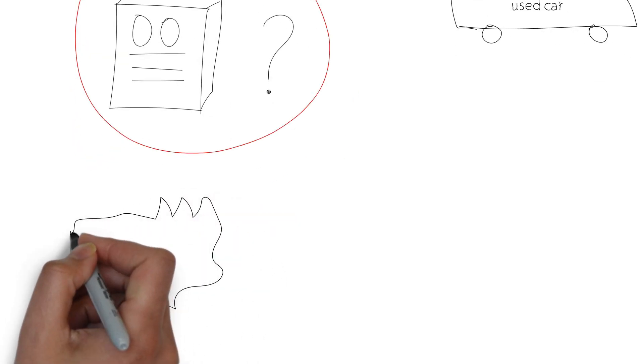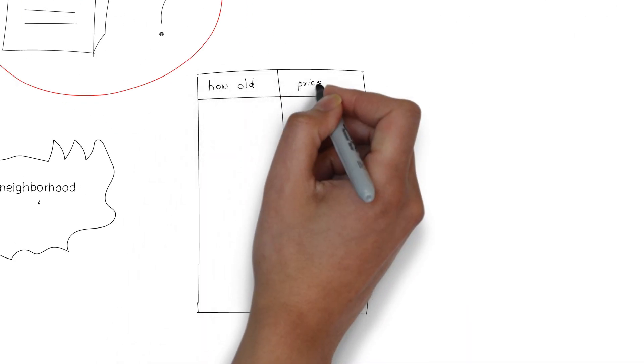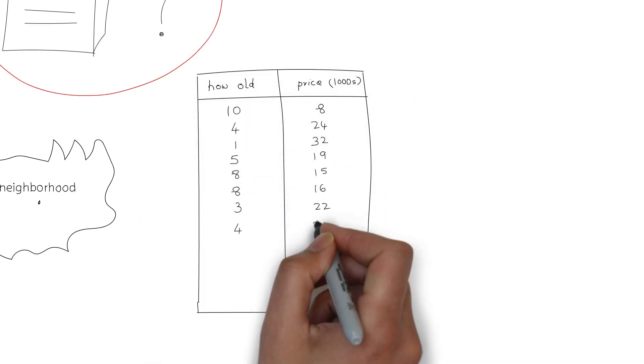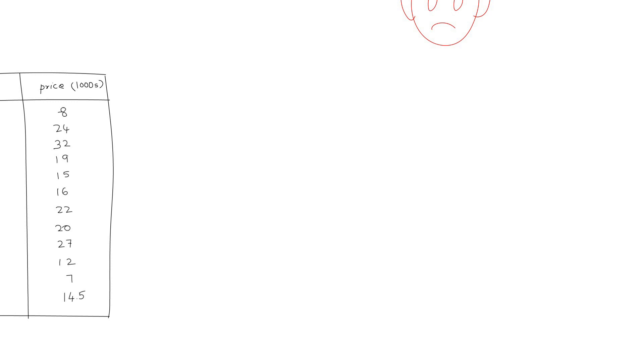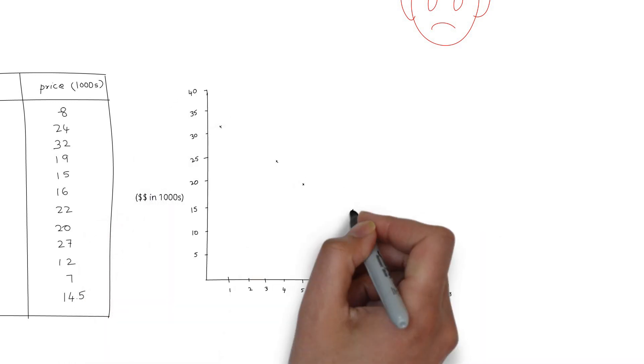Let's say here's the data for used cars sold in my neighborhood. It shows how old the car is and what price it's sold for. If I plot this with price against how old the car is, I get something like this.